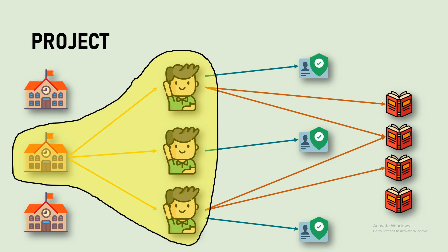Now let's look at schools and students. One school can have n number of students — that is a one-to-many relationship. But from the perspective of the student, it's a one-to-one relationship in reverse, because one student can only belong to one school, while one school can have many students.